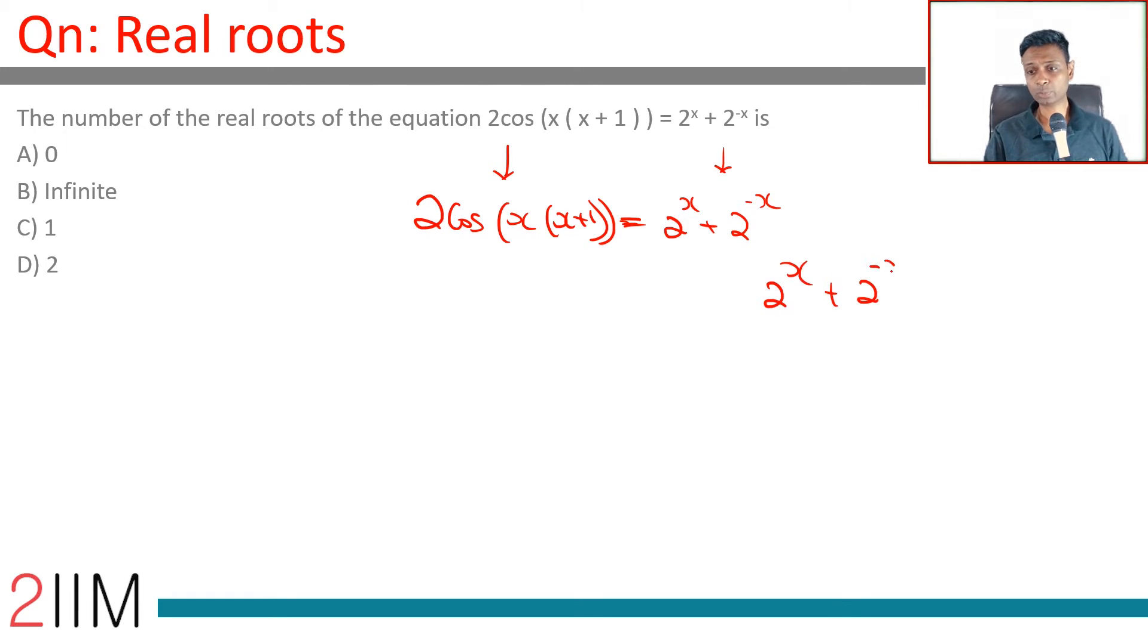2 power x plus 2 power minus x is like y plus 1 by y. 2 power x is y, 2 power minus x will be 1 by y. Now, any expression from y plus 1 by y is either greater than or equal to 2 or y plus 1 by y is less than or equal to minus 2.